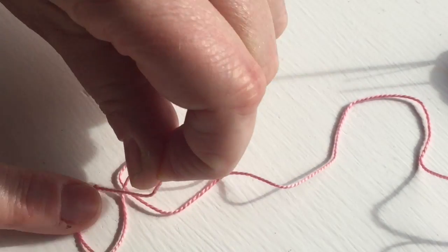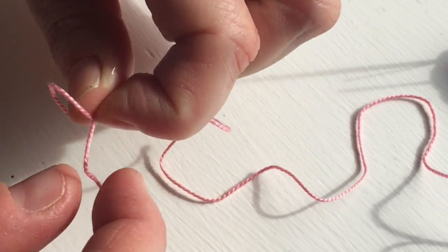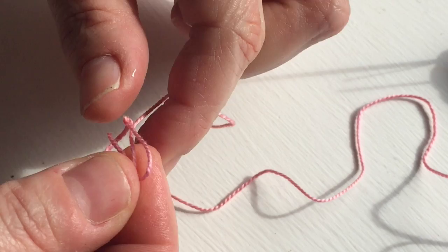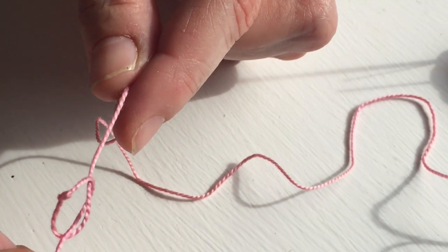I'm going to bring this around to make a loop, and then I'm going to take the end and put it through the loop. When I pull it, you can see where the knot is.